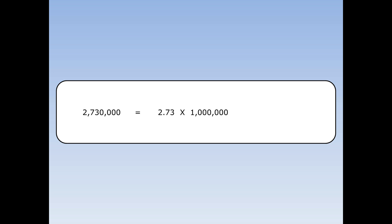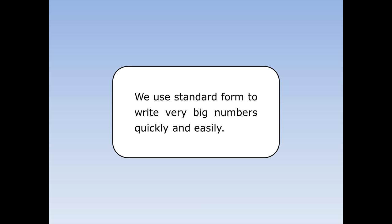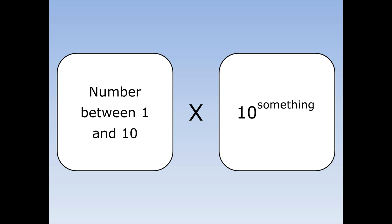Two million seven hundred and thirty thousand. What number should I choose for the front? I can't choose two hundred and seventy-three — that's too big. I can't choose twenty-seven point three — that's bigger than ten. The number I need to choose is two point seven three, because that is between one and ten. Two point seven three times a million equals two point seven three times ten to the sixth. We use standard form to write very big numbers quickly and easily. A number in standard form must be a number between one and ten, times ten to the power of something.